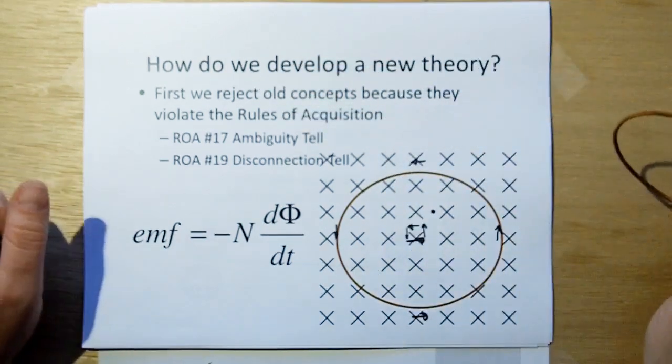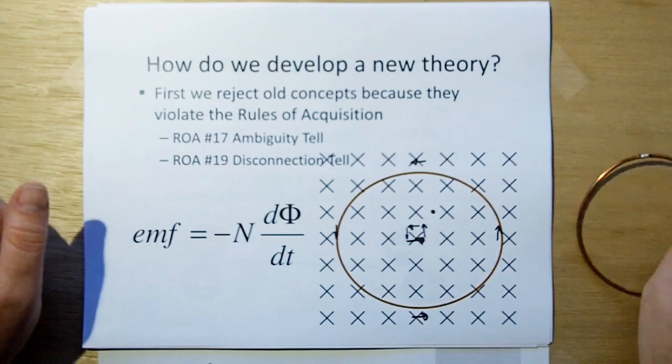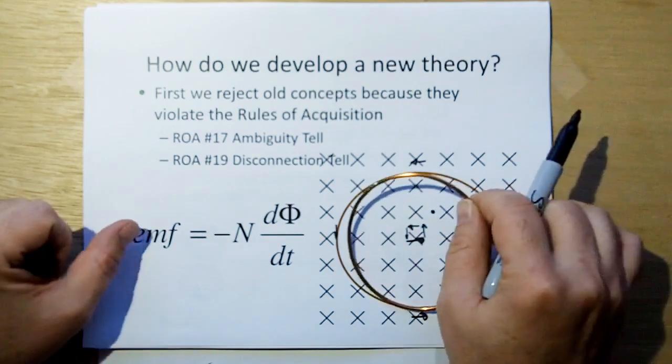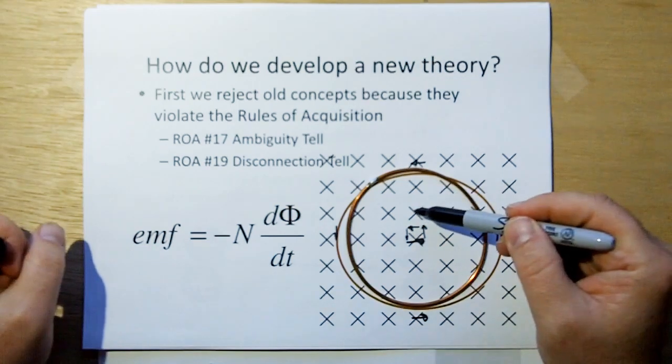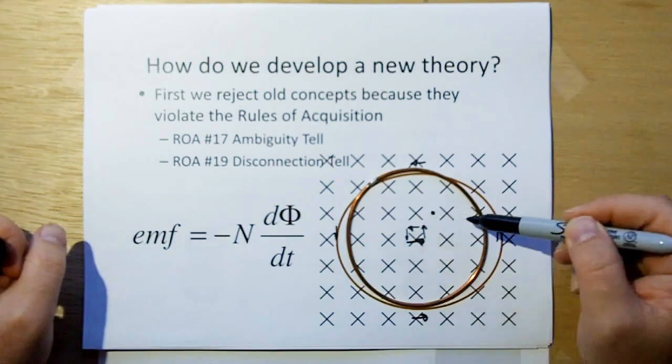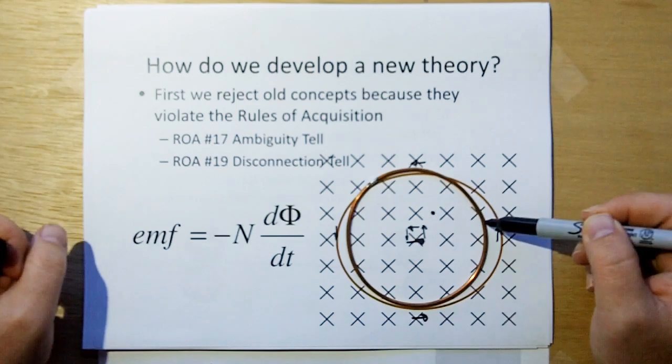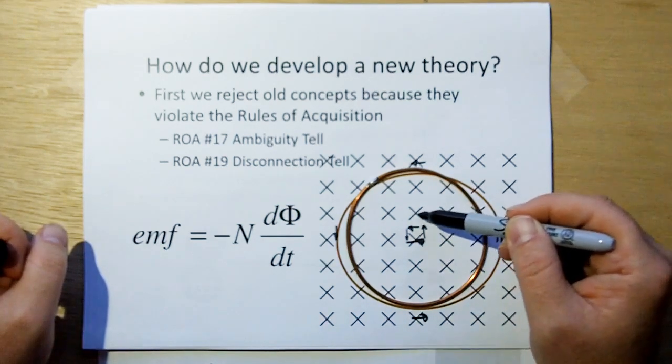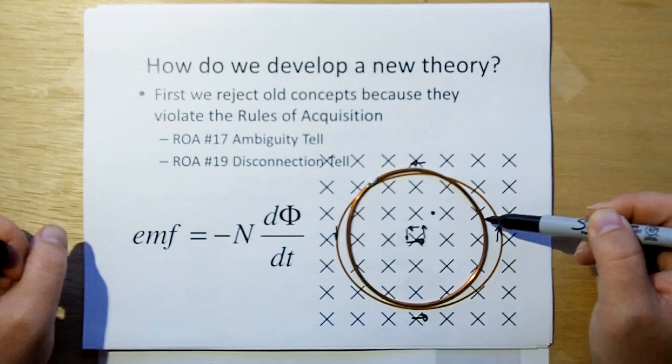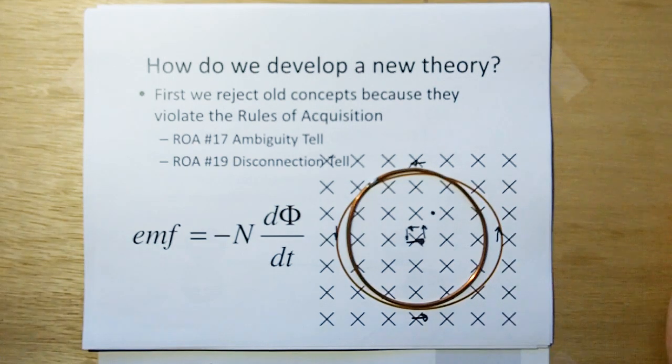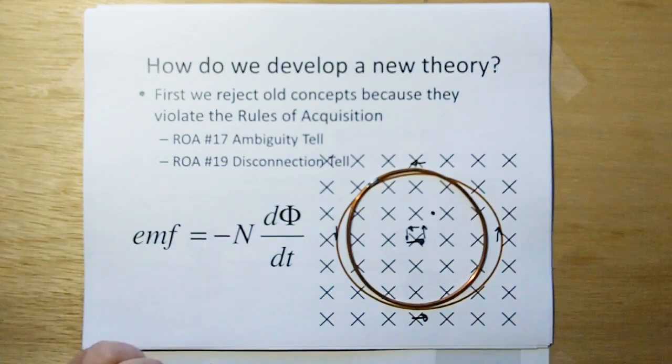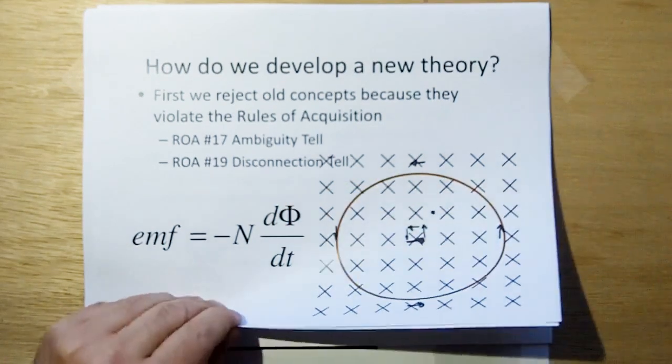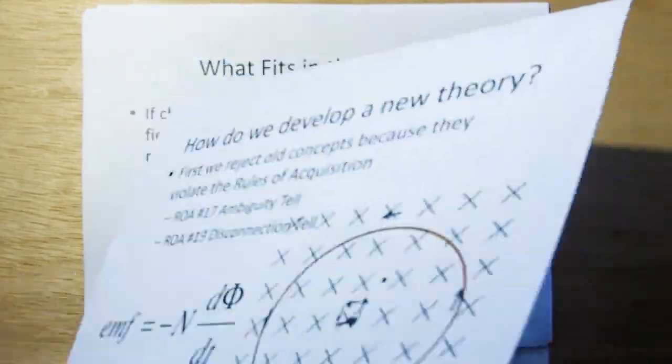And in fact, the ambiguity tell was developed from my early work 20 years ago. And then there's a disconnection tell. What bothers me is, well, how does a magnetic field flux line that's changing in intensity here affect the loop out here? It's disconnected. How does the change affect over here? That's a tell. That means there's something, we don't know the full truth here. Okay, so we can basically throw Faraday's law out. There's got to be a better way to explain induction without this nonsense.